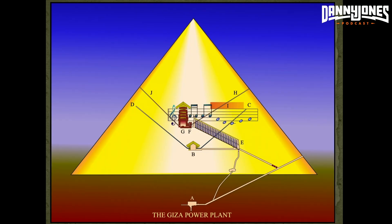So what is the specific function of A, the subterranean chamber? In the Giza power plant theory, A is a chamber that contains the means to drive vibrations into the earth. So there was something inside the chamber underneath the pyramid — inside the chamber, yes — that would vibrate the earth. And also at the same time, probably the pyramid. So it would serve two functions: sending vibrations not just into the earth, but also into the pyramid itself.